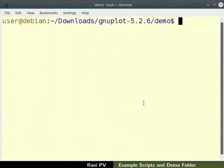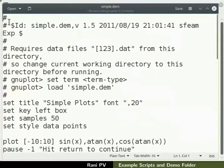Now let's look at the structure of an example script using a text editor. I will use gedit text editor. You can use any other editor of your choice. Type gedit space simple.dem and press enter. Windows users may open the file in notepad. The script file opens in the text editor window.